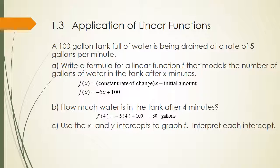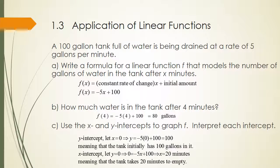For Part C, we take the equation from Part A. The y-intercept, when x is zero, is 100 gallons — so there are 100 gallons when time is zero. The x-intercept is where y equals zero; solving gives x equals 20. That means it takes 20 minutes for the tank to empty. We then graph the function using those intercepts.